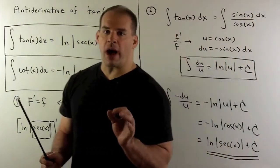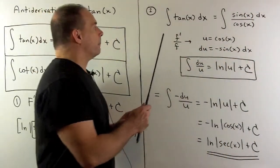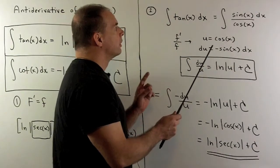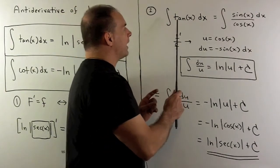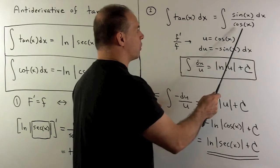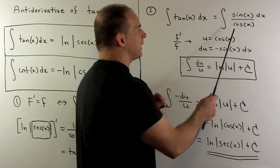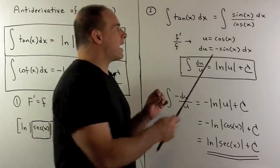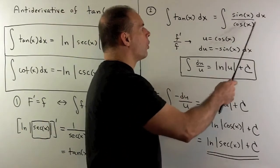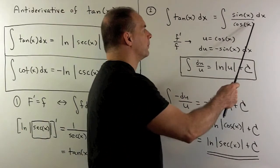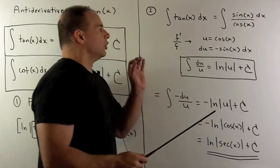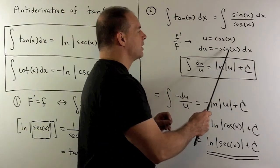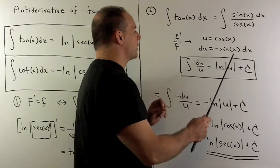Let's see how we get this directly. We have the indefinite integral of tangent of x with respect to x. We can rewrite tangent of x as sine of x over cosine of x. And we note, if I take the derivative of cosine, I have minus sine. So what we have here is f prime over f.